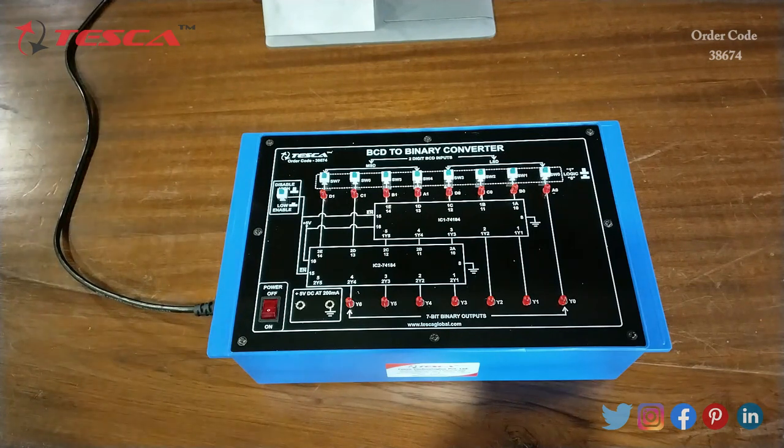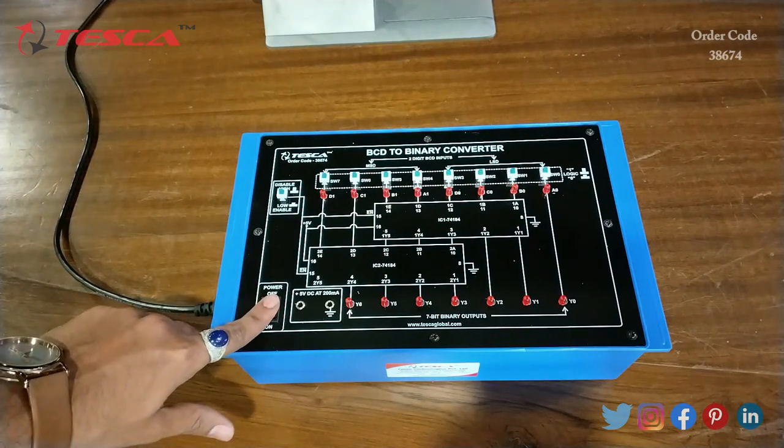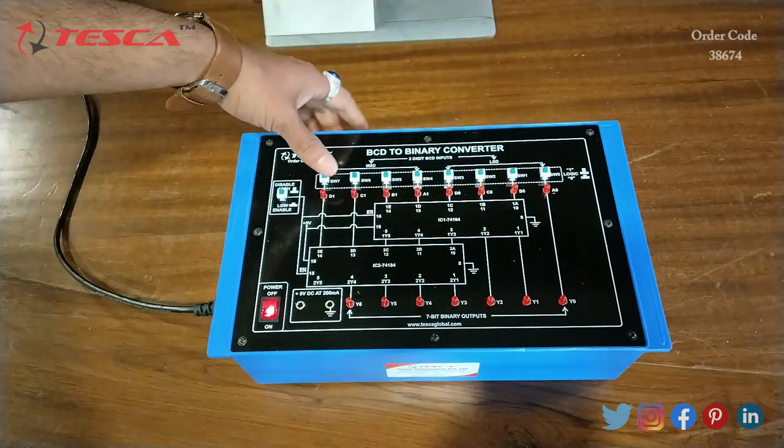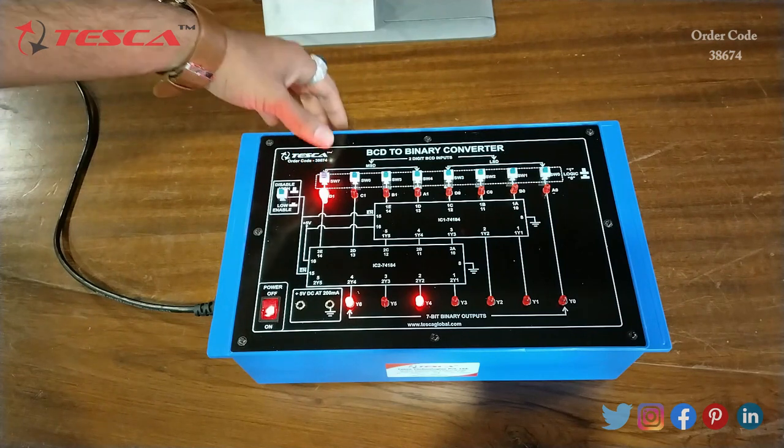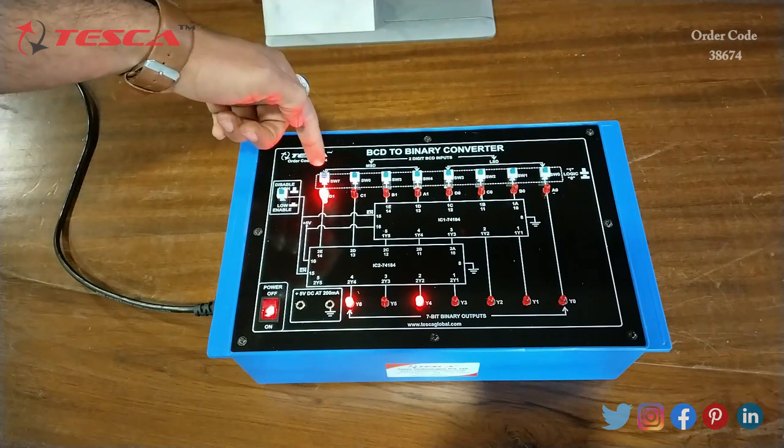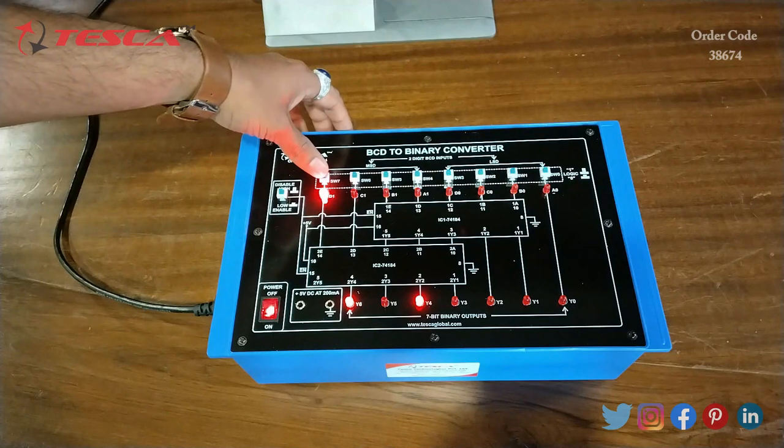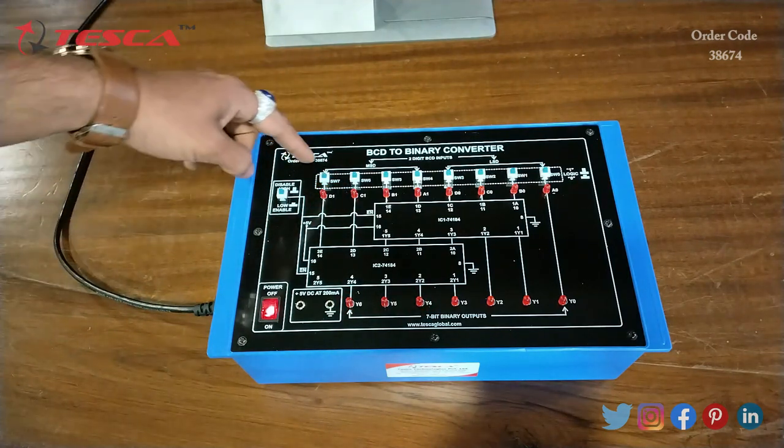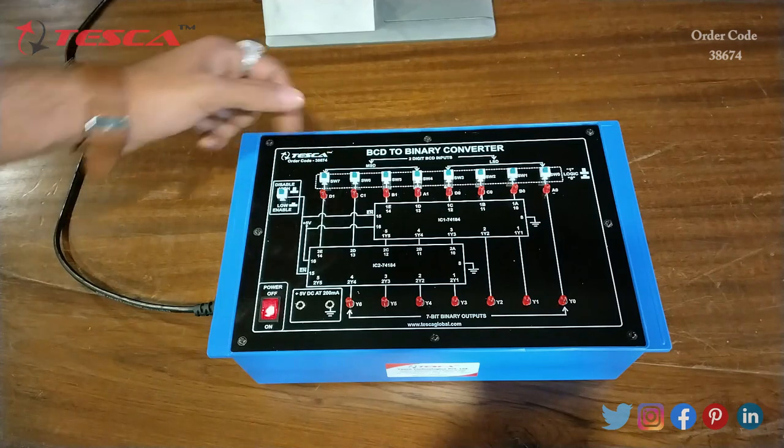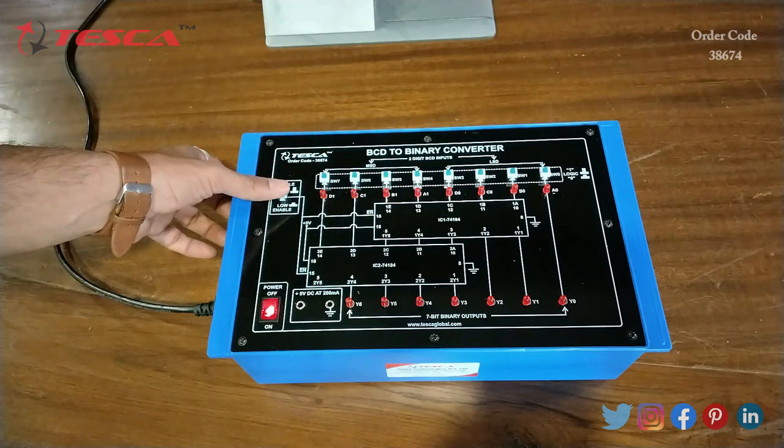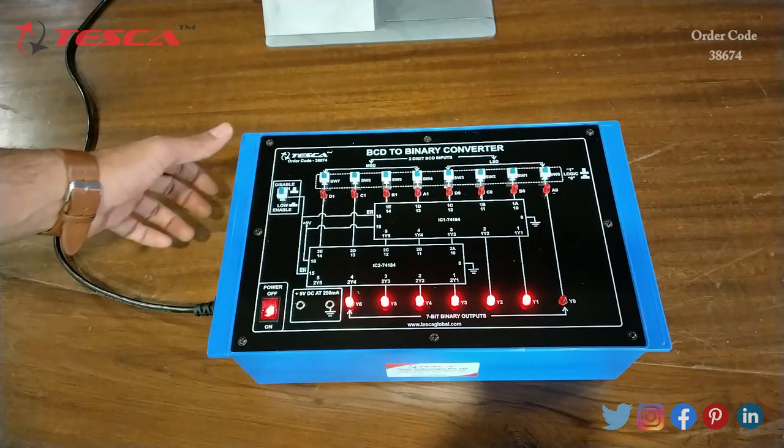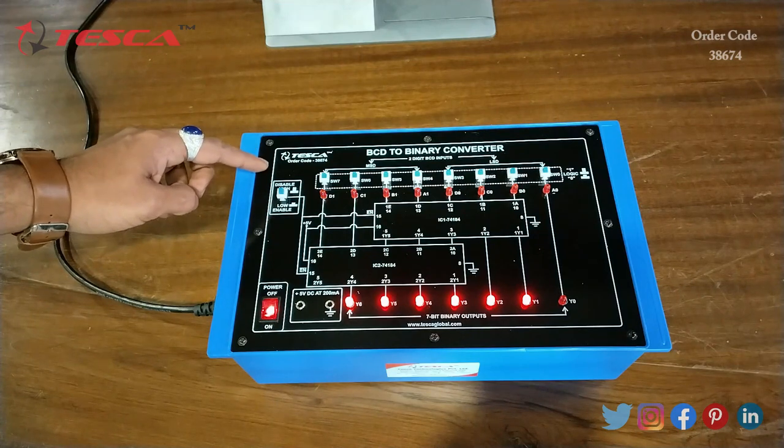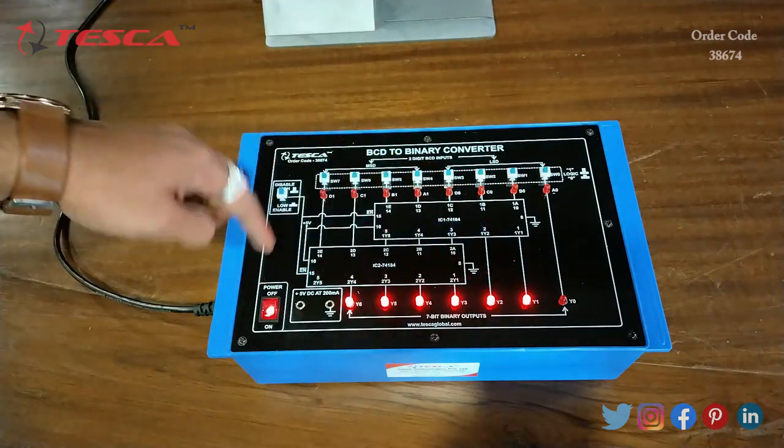Now let's see the working of this kit. We have to switch on the kit and give 0 as input. Right now it is giving 1 as input so we have to press it back and keep the switch position down to give 0 logic. For performing the experiment we have to keep this switch at low enable position. Right now it is at disable high position so all the LEDs are glowing.